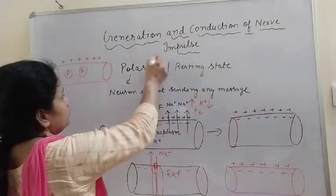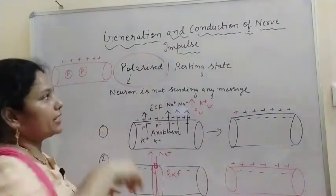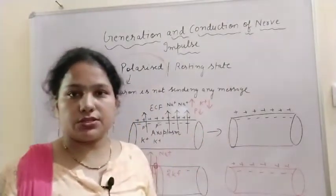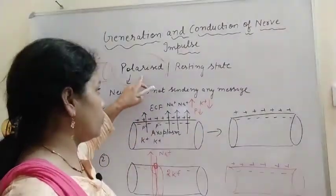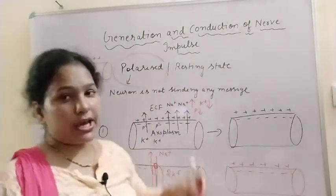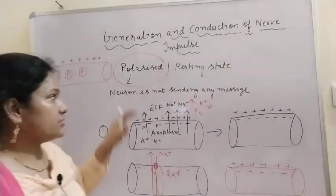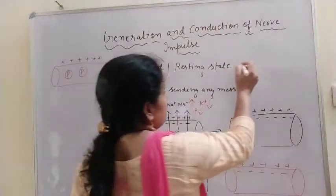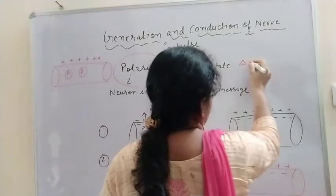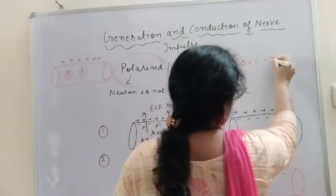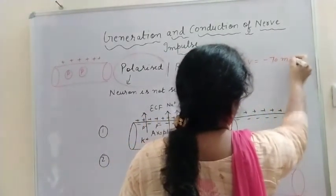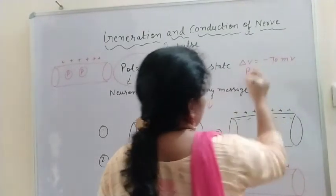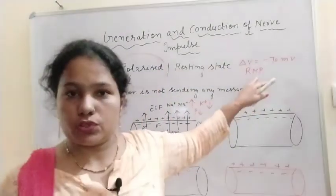So in the polarized or resting state, the concentration of sodium ions outside is more, potassium ion concentration outside is less, and protein concentration outside is less because proteins remain inside the axoplasm. At this state, the membrane is not generating or sending any message. The membrane potential at this resting state — the potential difference — is minus 70 millivolts. This is known as the resting membrane potential, or RMP.